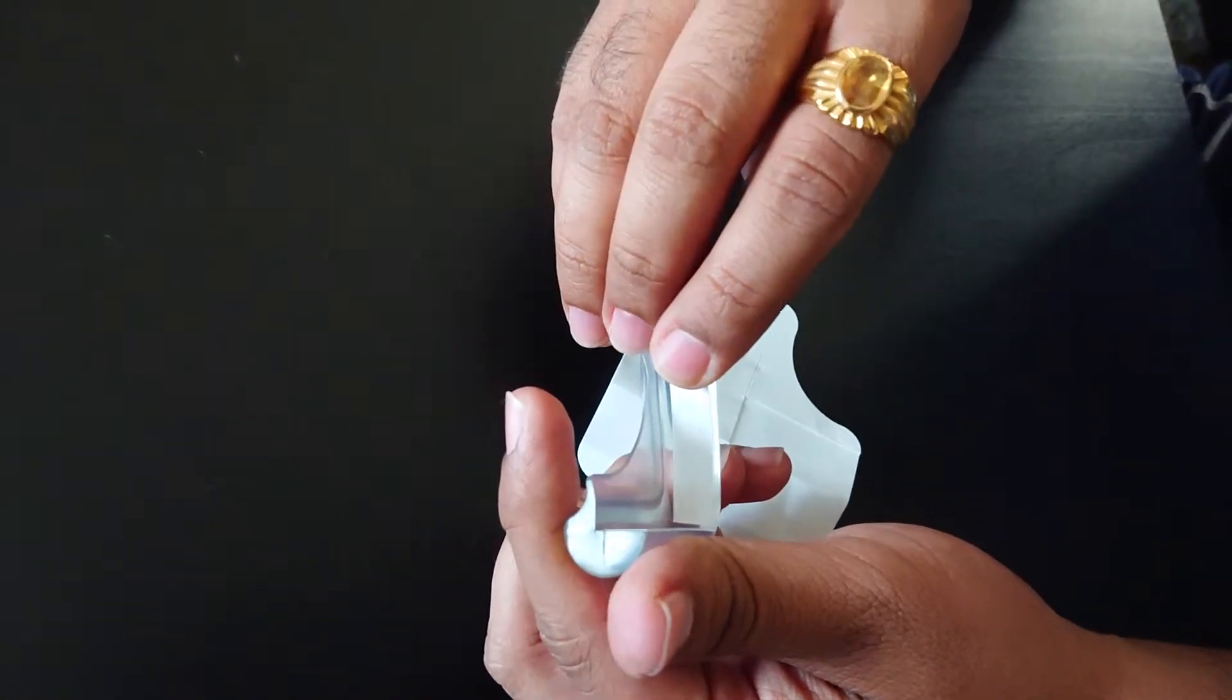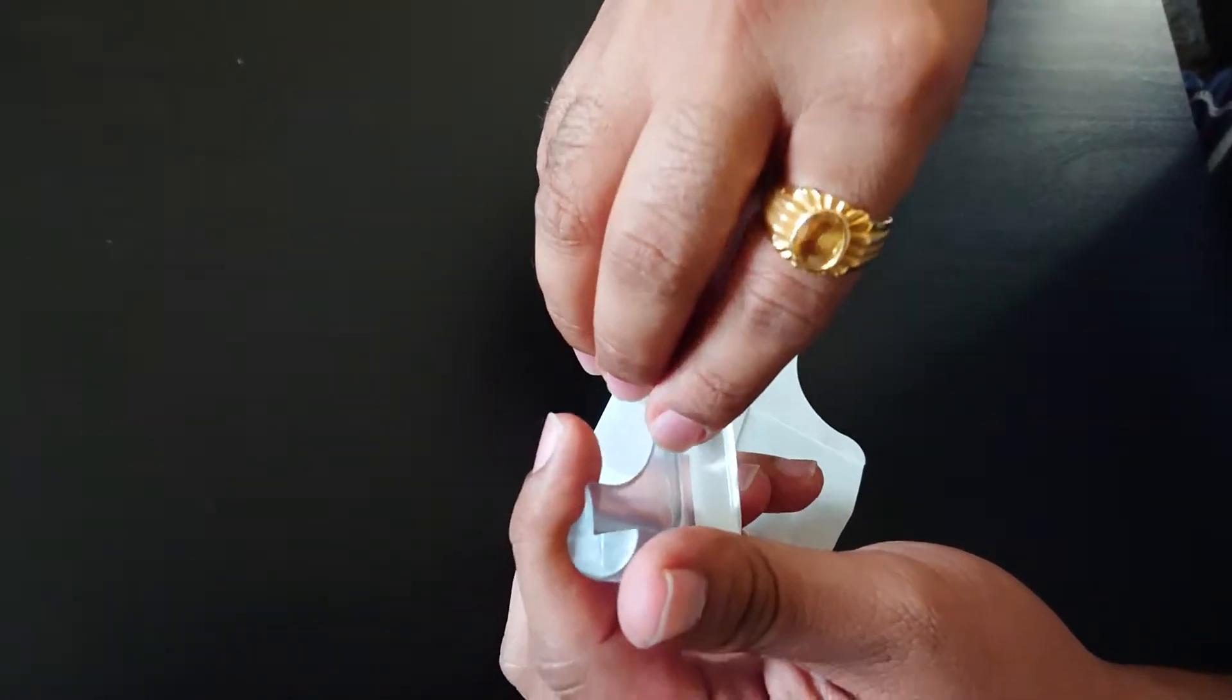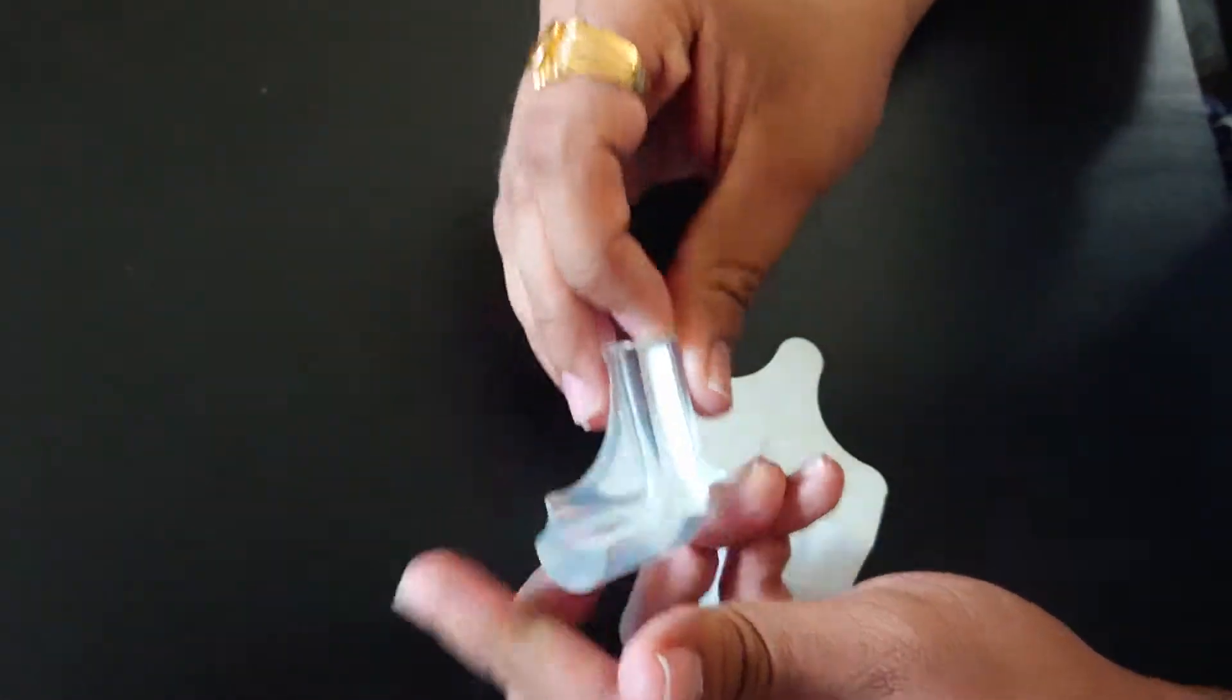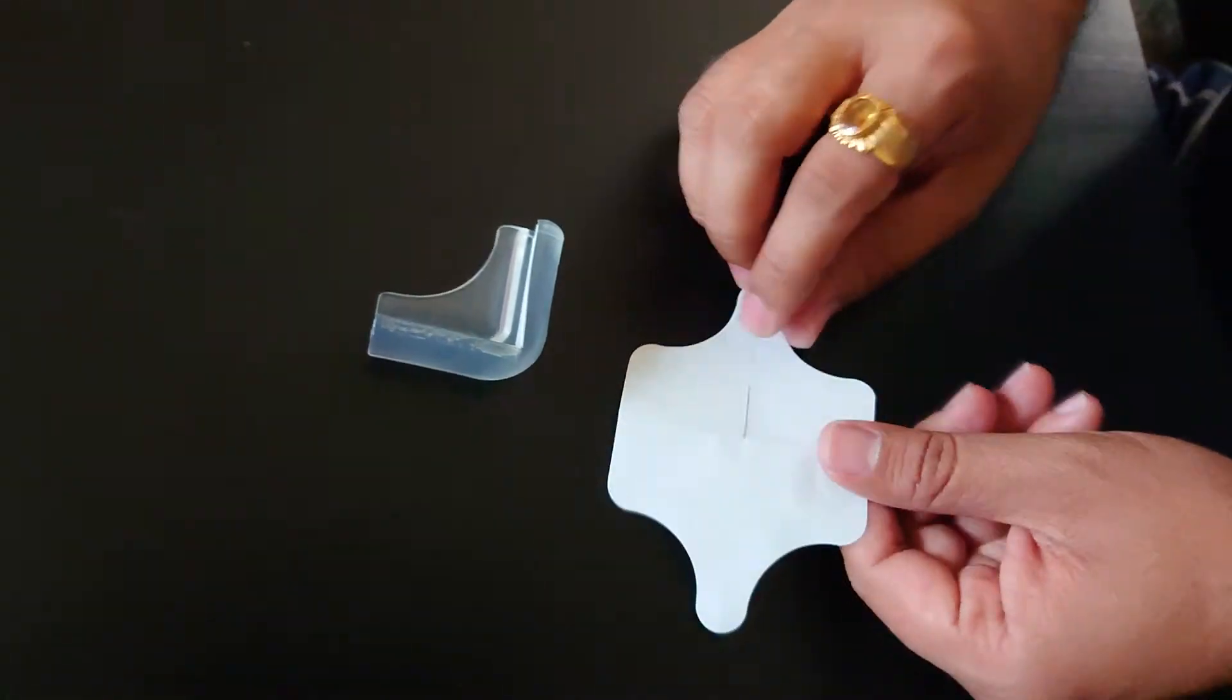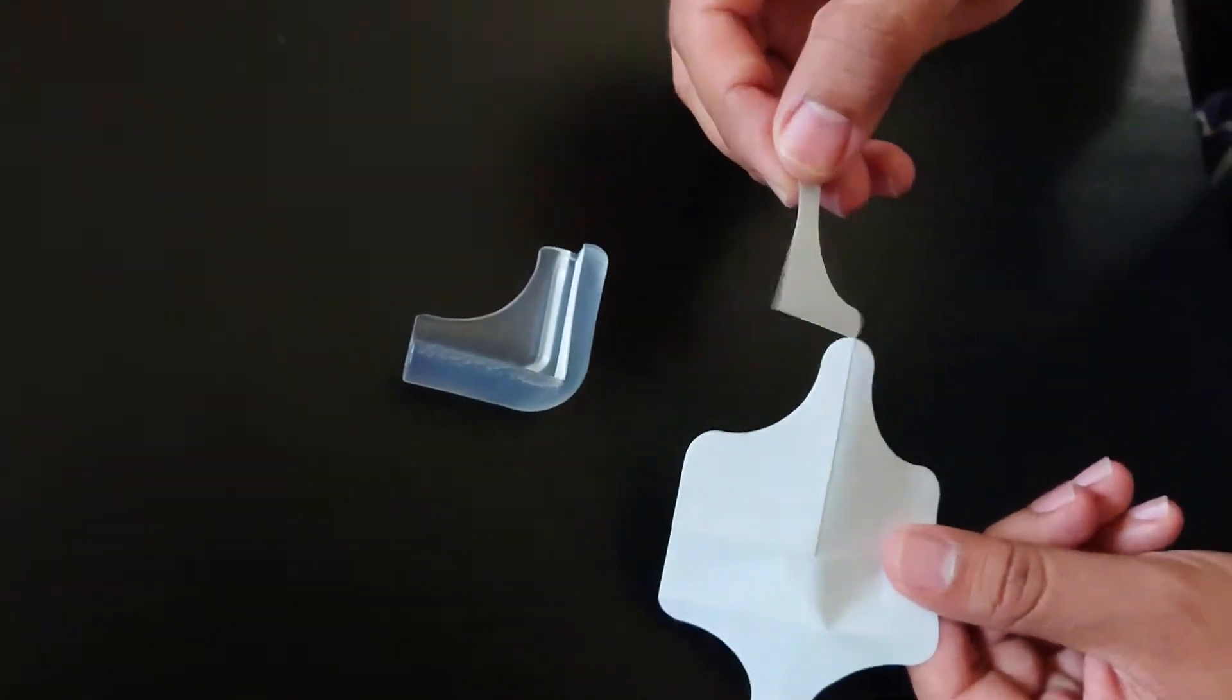Just peel it and tape it first to all three. I mean, tape all three to the angle.